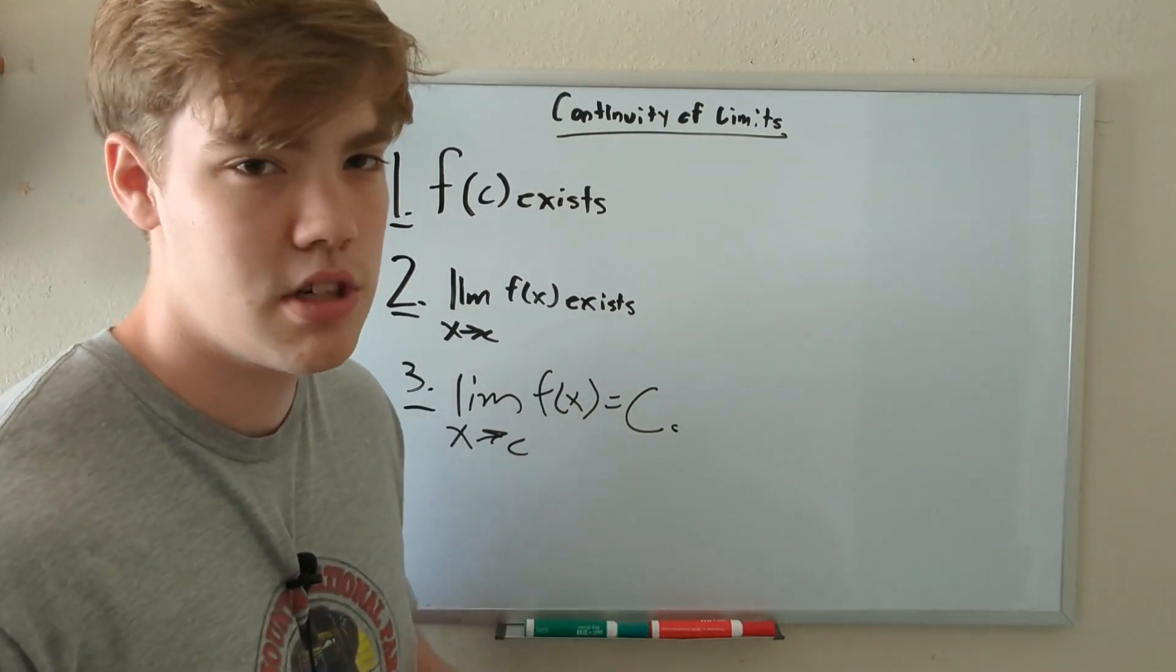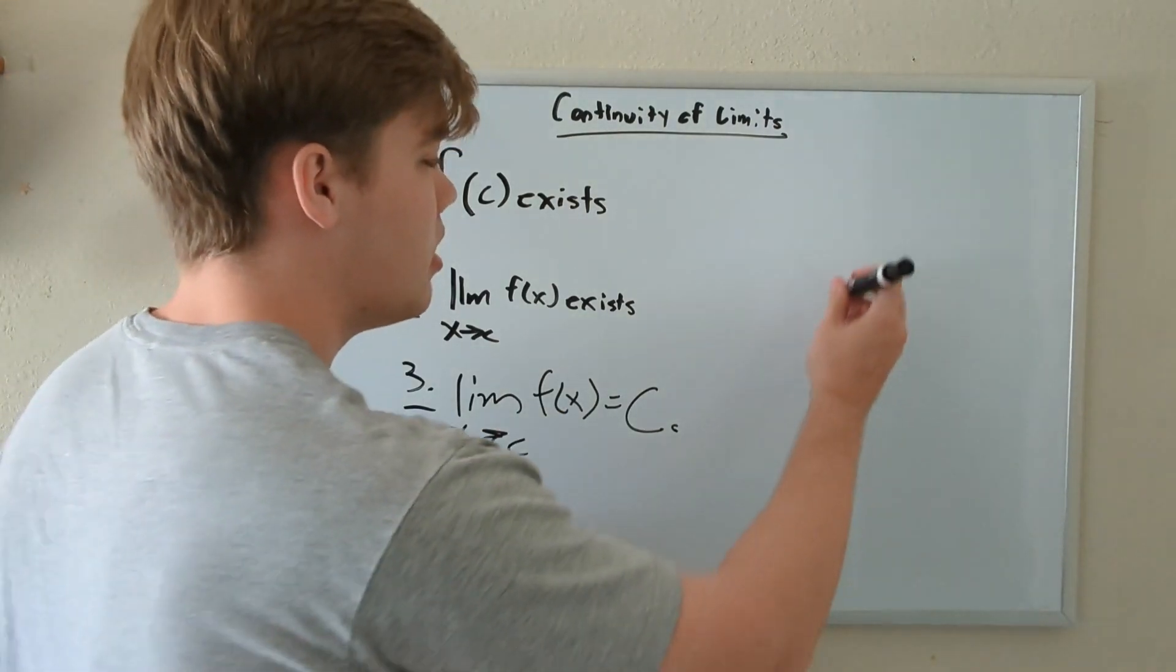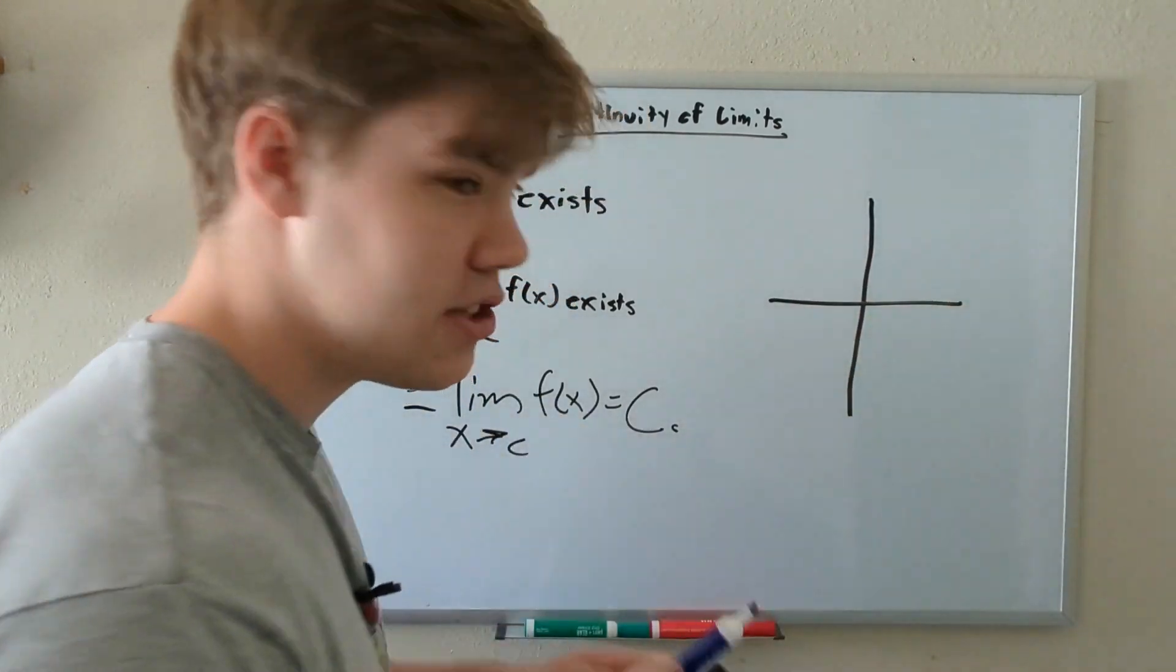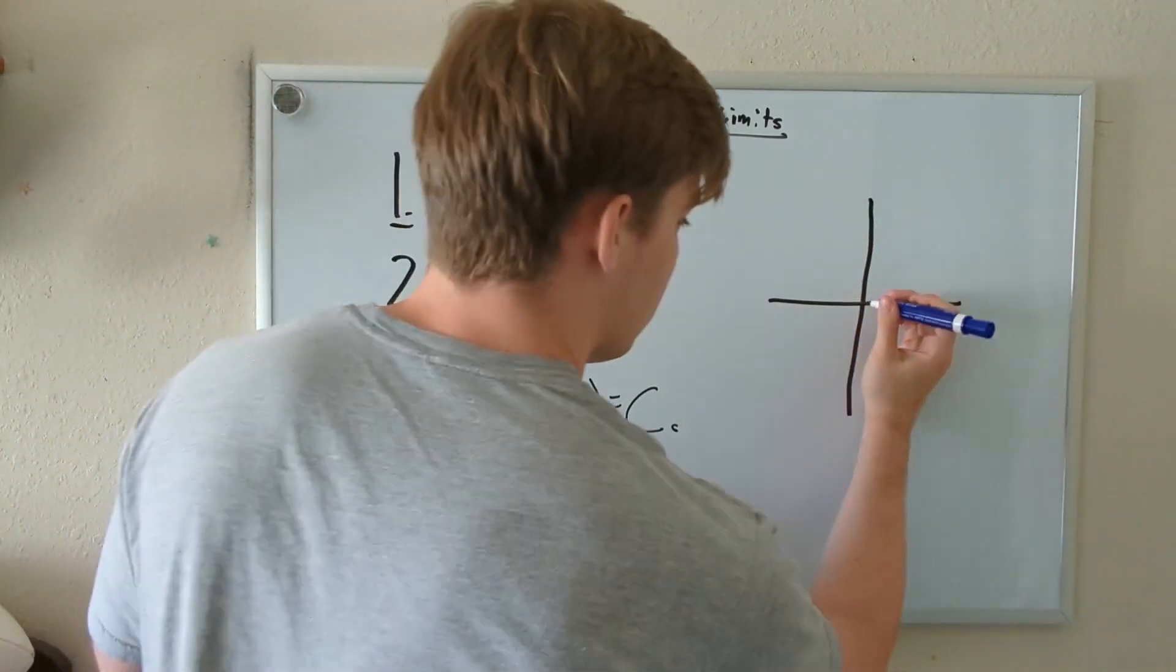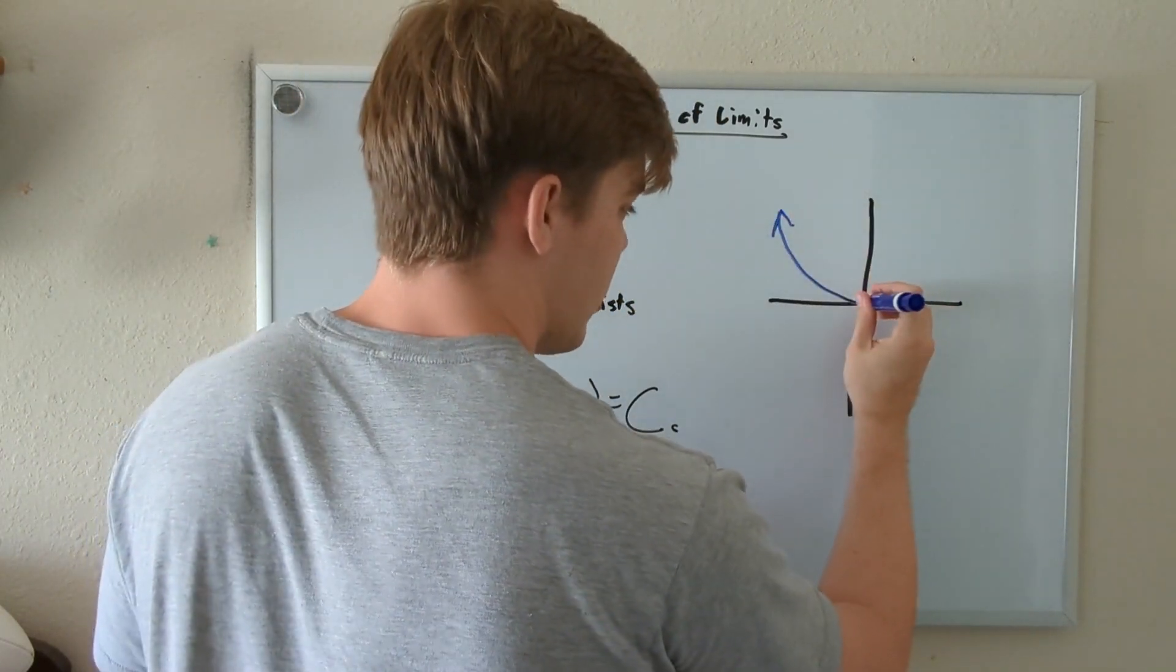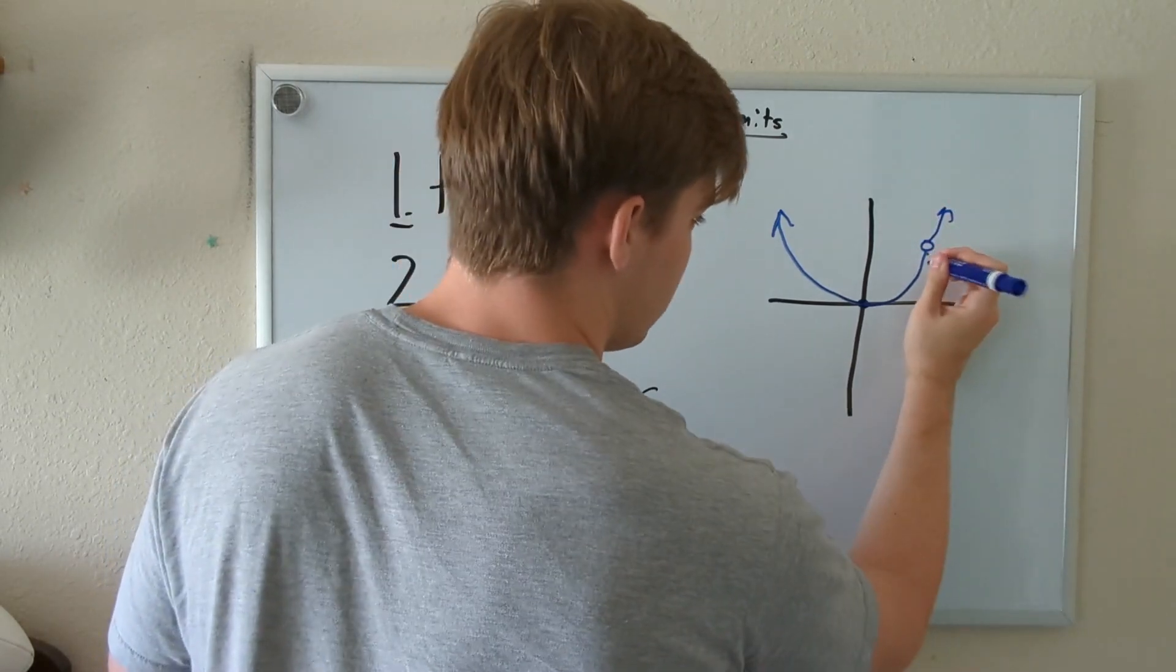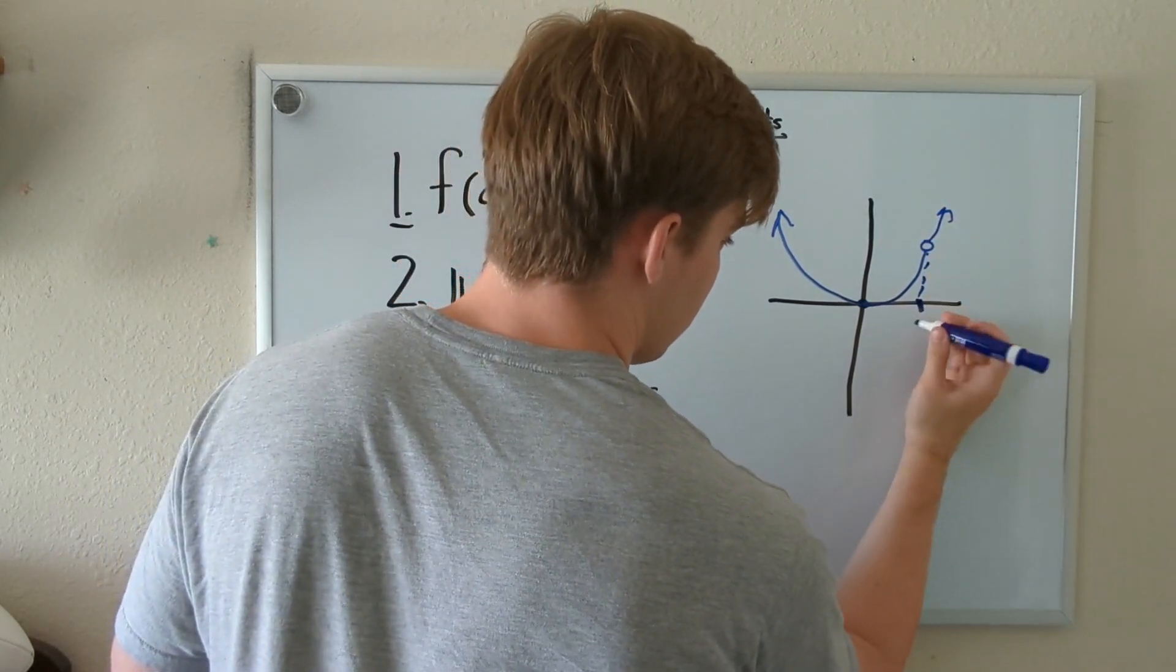And well, since we have them all written down, we may as well start doing examples. We'll start with this one. We have our XY plane here and here, and I'm going to draw a graph. It looks like an X squared parabola, but here we have this little hole, and this point is X equals two.